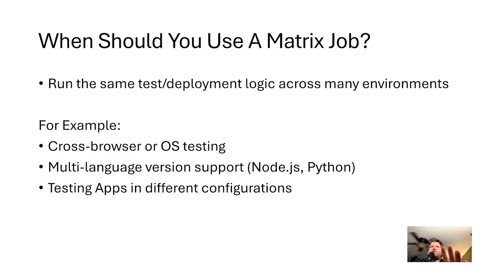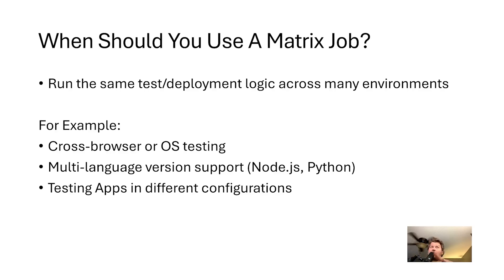Matrix Jobs are great when you need to run the same test or deployment logic across many environments — for example, cross-browser or OS testing. The most common use case I see is multi-language version CI, like testing different versions of Node.js or Python. Testing apps in different configurations is another reason a matrix job may come in handy.